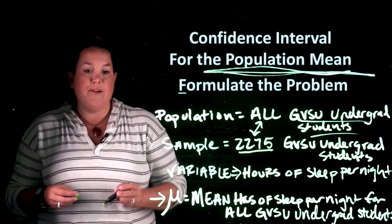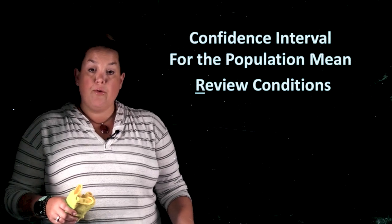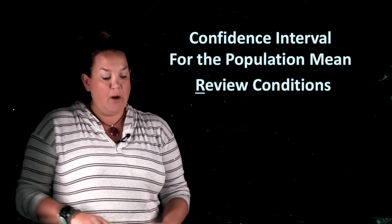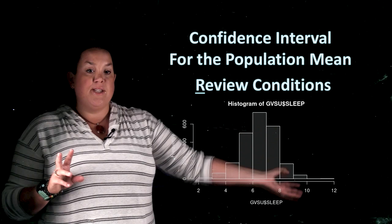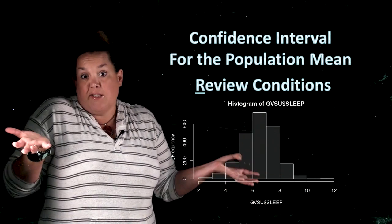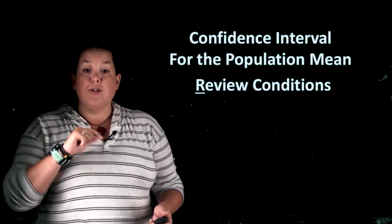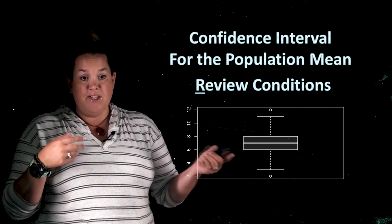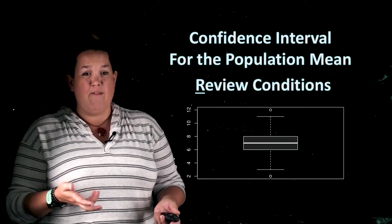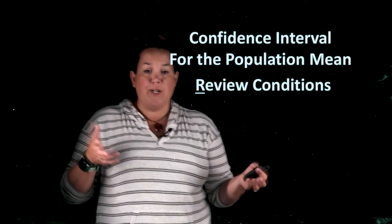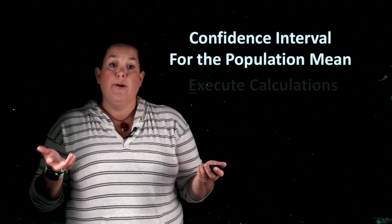Next we move into Reviewing conditions. There are two things we need: first, the data has to be fairly symmetric. Looking at the histogram, it is fairly symmetric and unimodal — approximately bell-shaped — so we're good there. Second, there shouldn't be too many outliers for the given sample size. The boxplot shows only two outliers for a sample size of 2,275, so conditions are met, meaning the formulas we're using are appropriate.